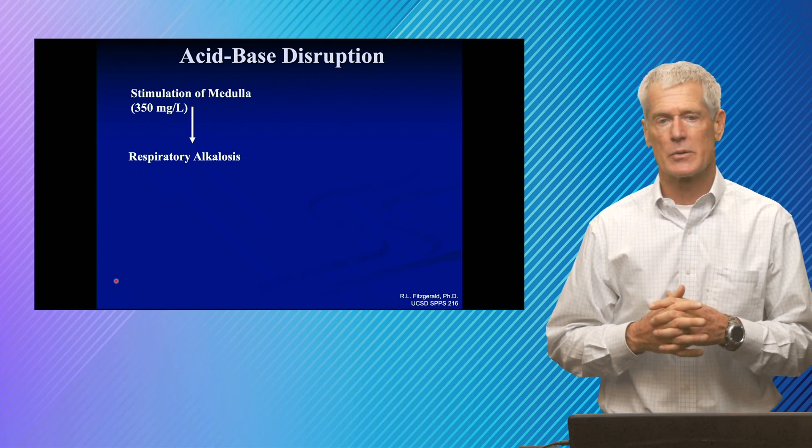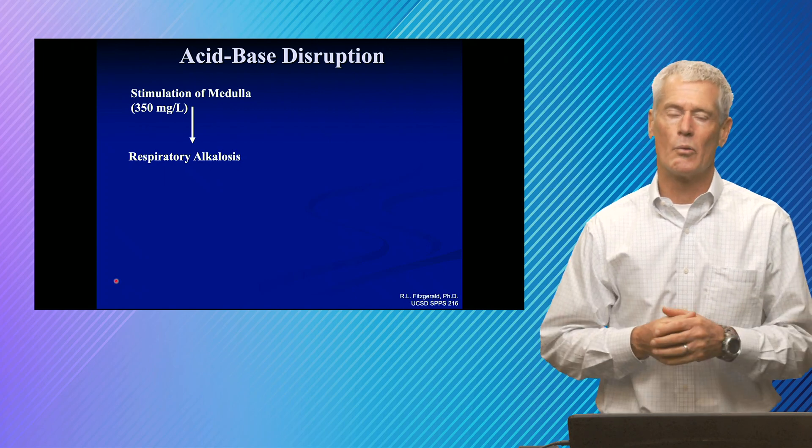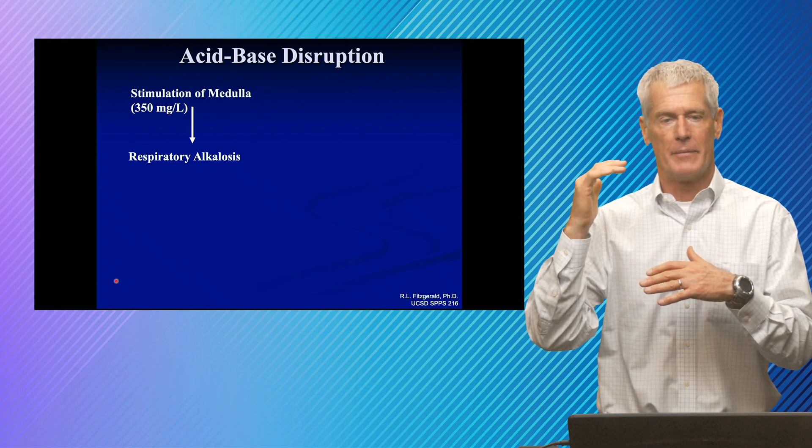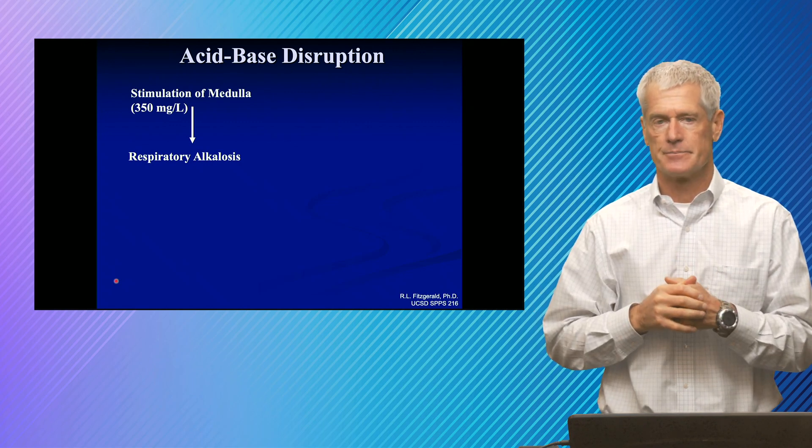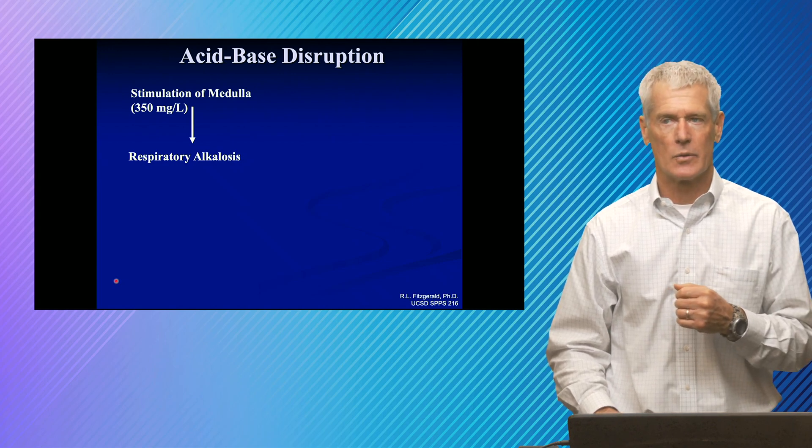And the compensation for a respiratory alkalosis is that you start to dump bicarb renally. You're trying to maintain that 20 to 1 ratio of bicarb, of base to acid, for the Henderson-Hasselbalch and maintaining your pH somewhere around 7.4.